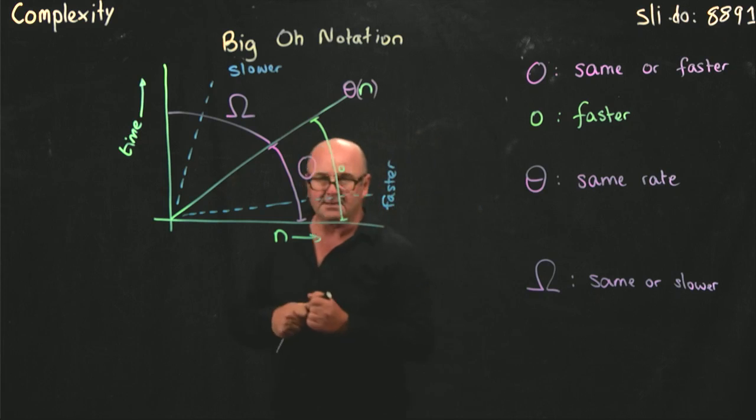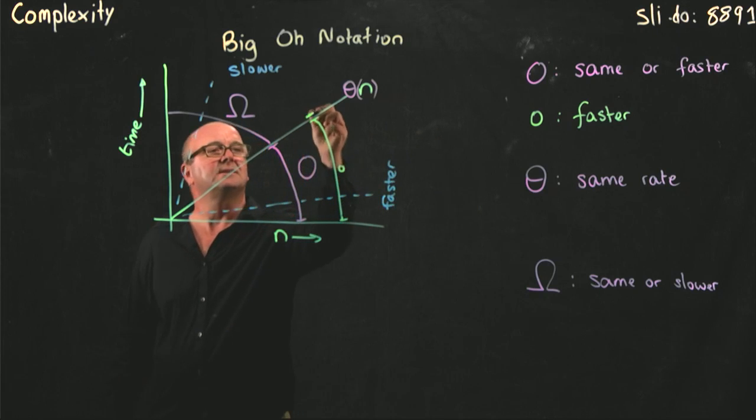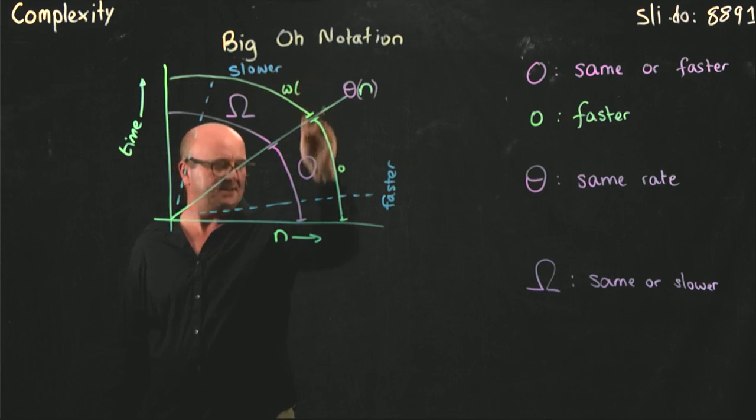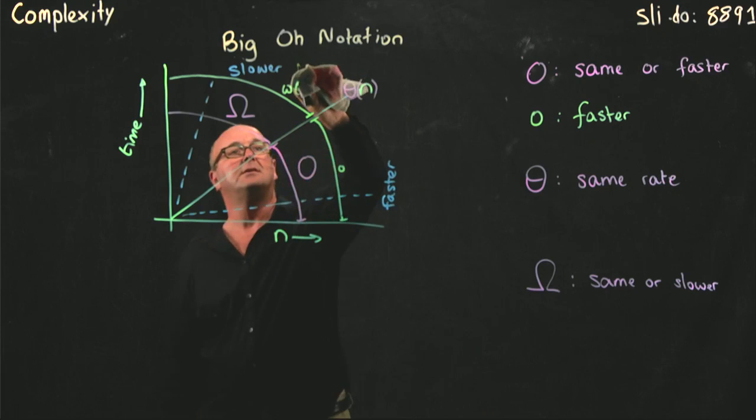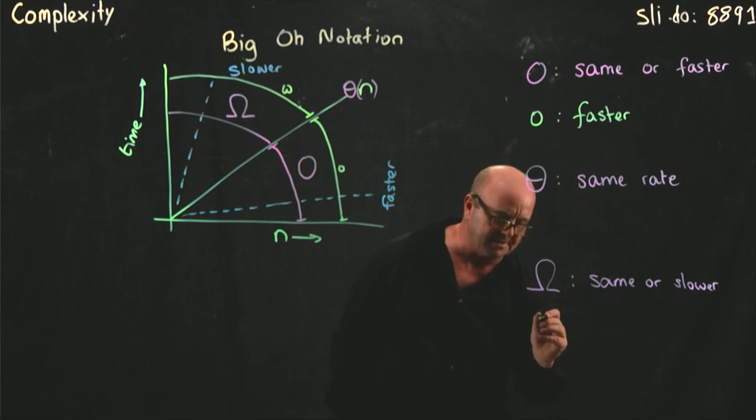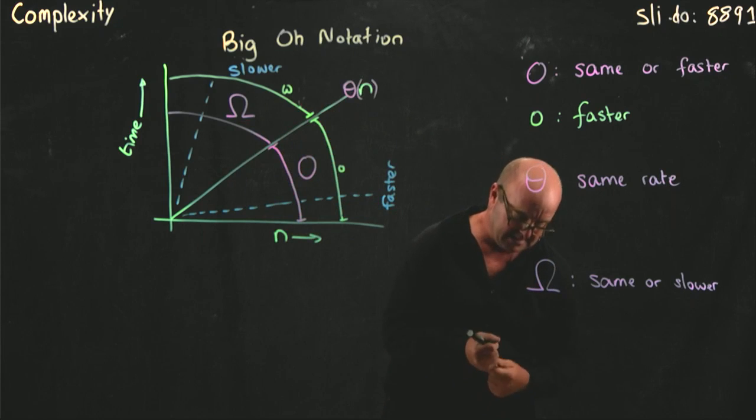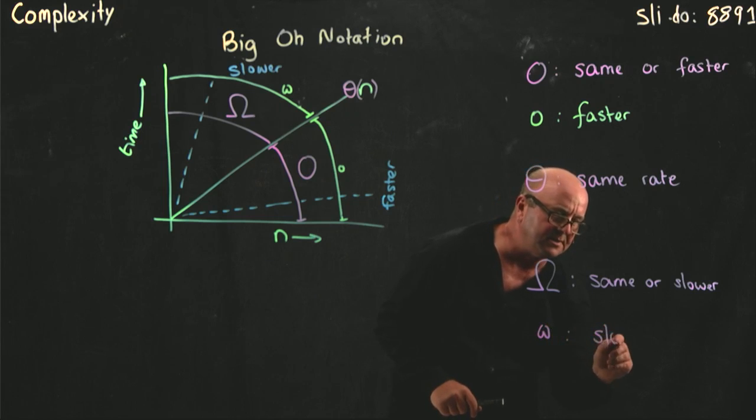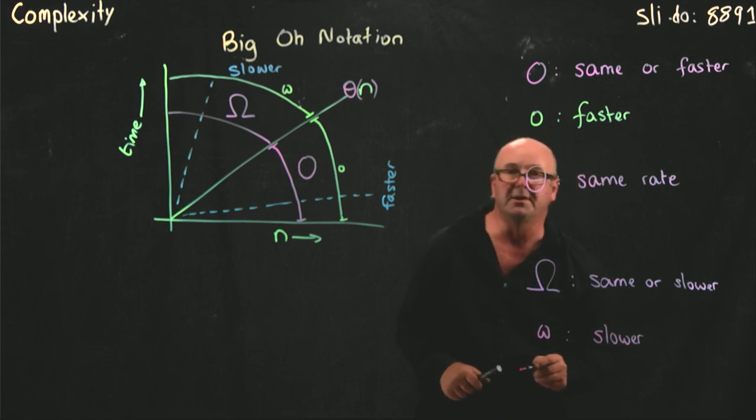And similarly, if there's complexity not including the line, but slower, then we say that has big Omega complexity. Sorry, little Omega complexity. So little Omega is slower but not the same.